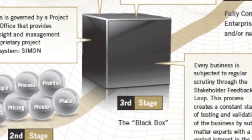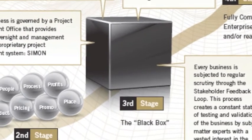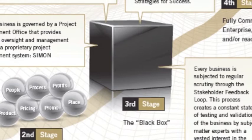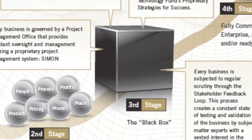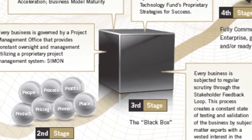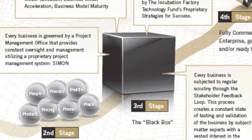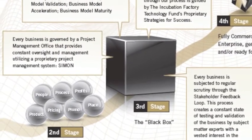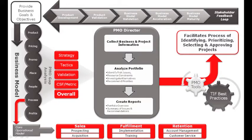Third stage: governed by our five key stages — product validation, business model validation, business model acceleration, and business model maturity. We defined these stages based on our experience as well as what we learned from our Inc. 500 peer group, all managed by our project management office and proprietary project management system. Each business is subjected to our stakeholder feedback loop, creating a constant state of testing and validation of the business by subject matter experts with the best interest in the technology's success.